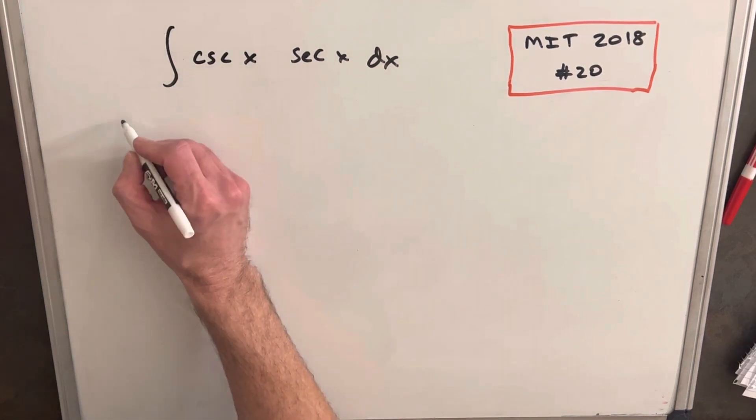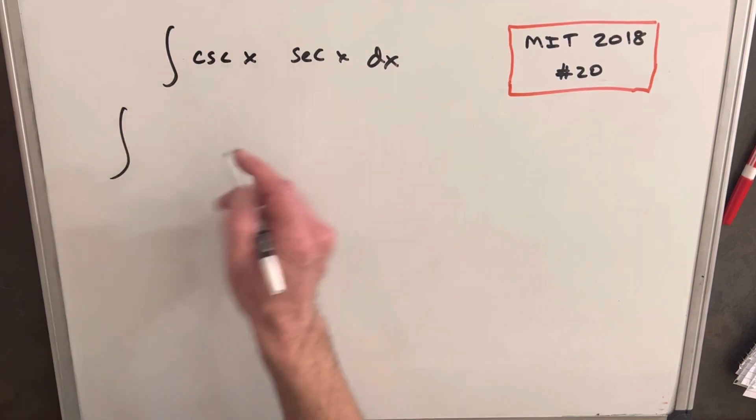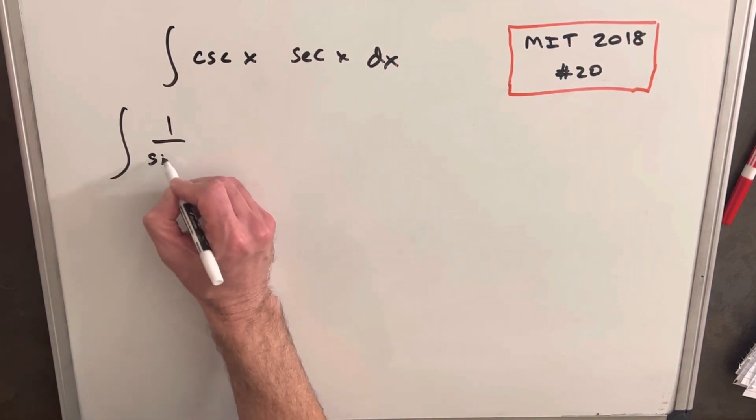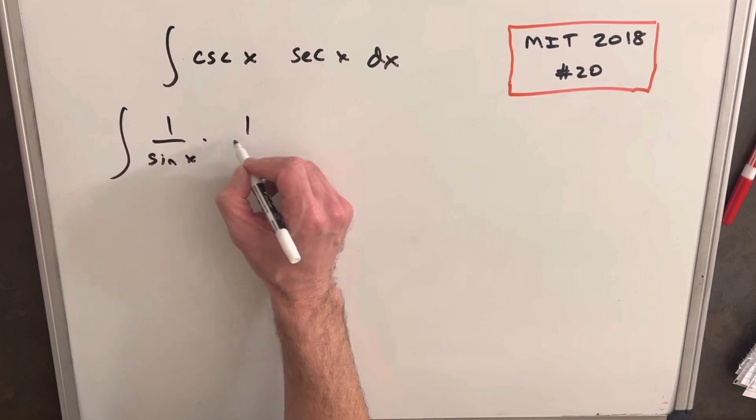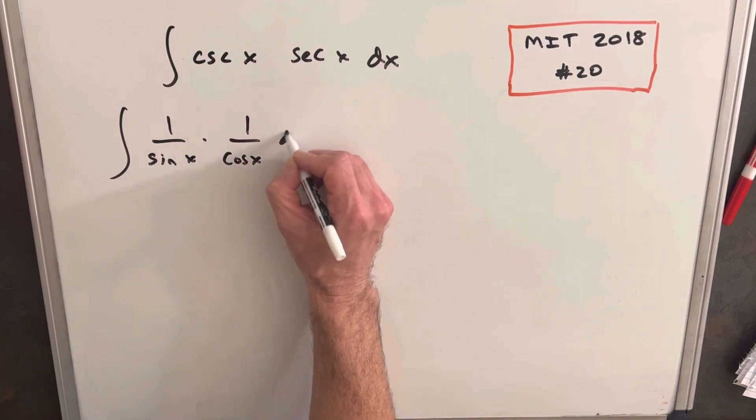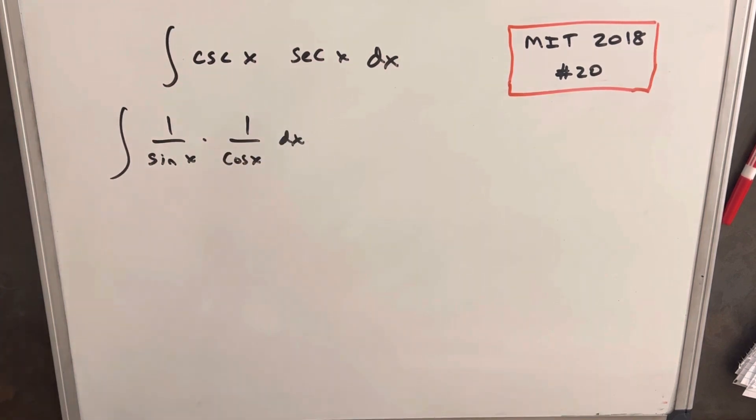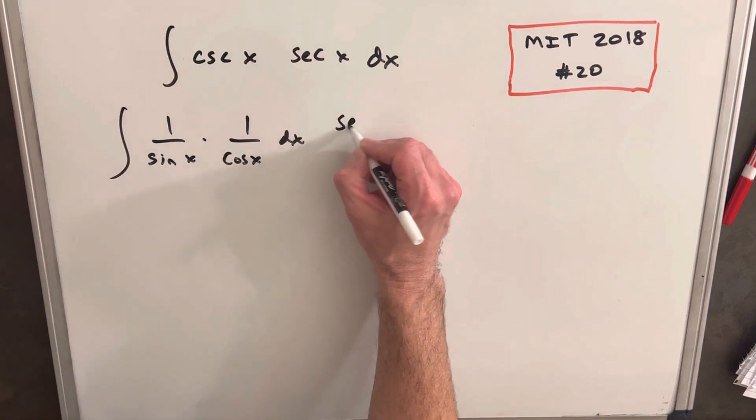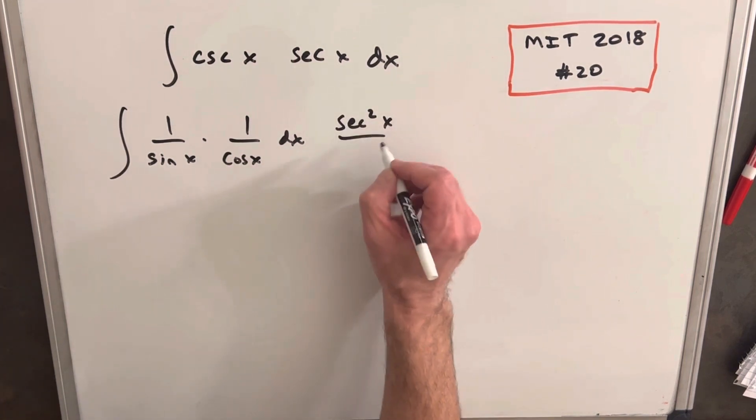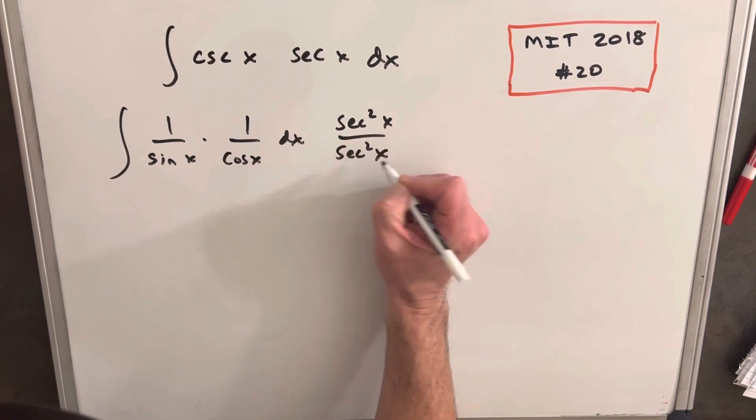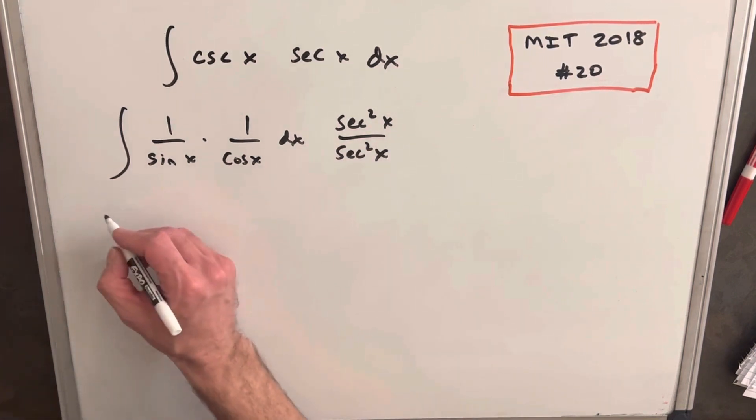At first, what I did is just rewrote this in terms of sines and cosines. And so we'll have 1 over sine x times 1 over cosine x dx. And then what I did here was, this isn't very intuitive, but this works really nice. You can multiply the numerator and denominator by secant squared. And then let's see what happens now.